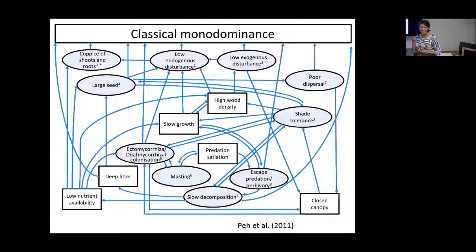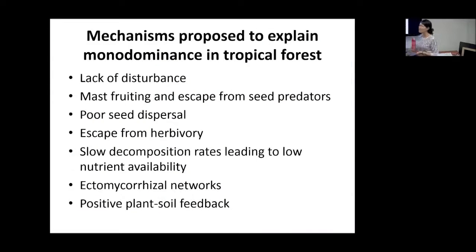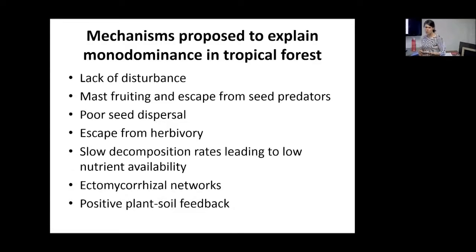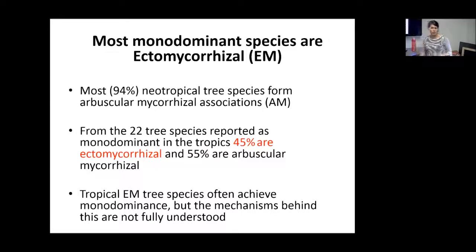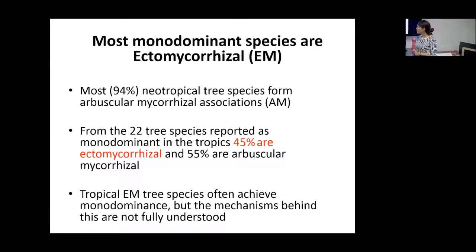People have been trying to explain tropical monodominance, and it is a complex phenomenon — many hypotheses have been proposed. In summary, the mechanisms proposed include lack of disturbance, mass fruiting and escape from seed predators, escape from herbivory, low decomposition rates leading to low nitrogen availability, ectomycorrhizal networks, and positive plant-soil feedbacks. Most monodominant species are ectomycorrhizal. In tropical forests, 94% of tropical trees form arbuscular mycorrhizal associations, but 40% of the 22 monodominant tree species form ectomycorrhizal associations, so we think that has something to do with how they achieve monodominance.